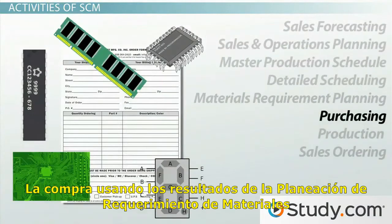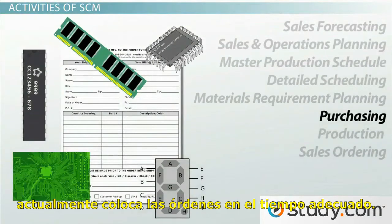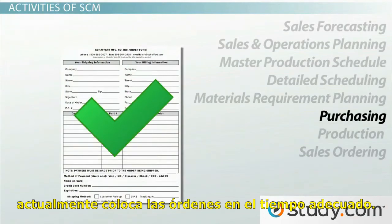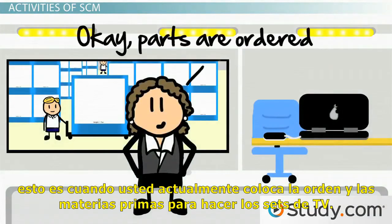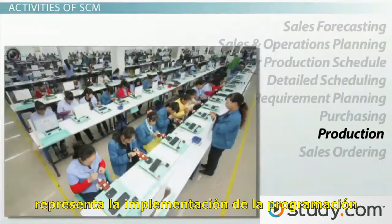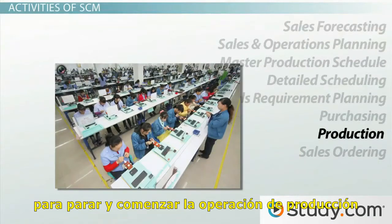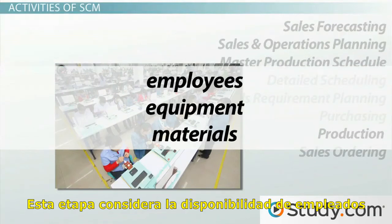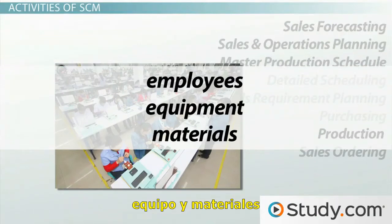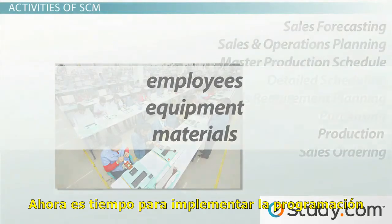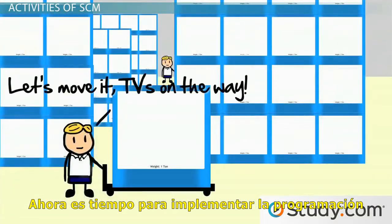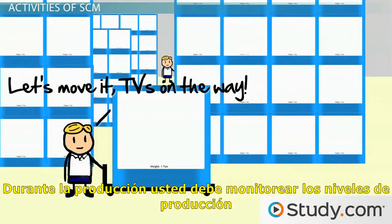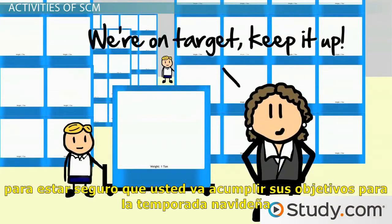Purchasing uses the results of materials requirement planning to actually place the orders in a timely manner. This is when you actually place your orders for raw materials to make the TV sets. Production represents the implementation of scheduling to staff and run the production operation, considering the availability of employees, equipment, and materials in an effort to meet production targets. Now it's time to implement the production schedule for the TV sets, monitoring production levels to make sure you are going to meet your targets for the holiday season.